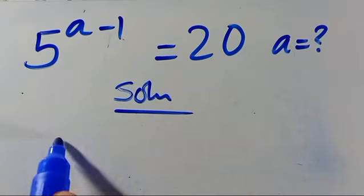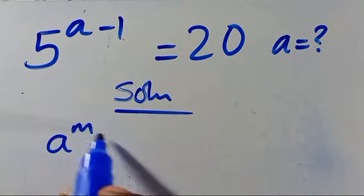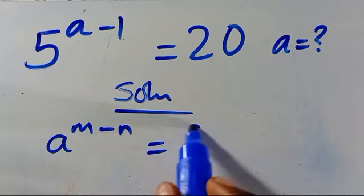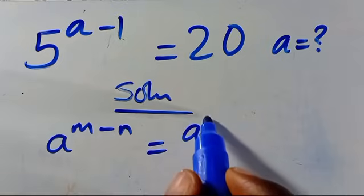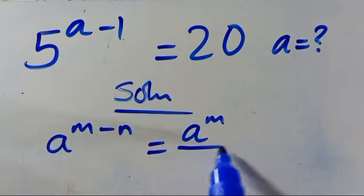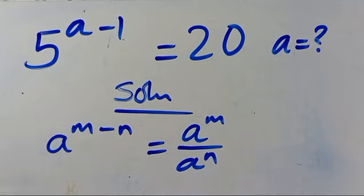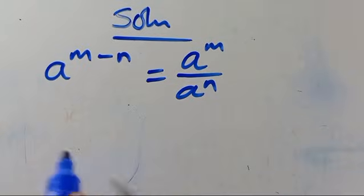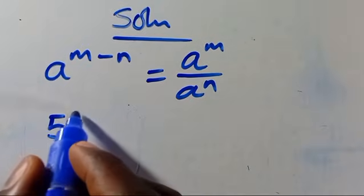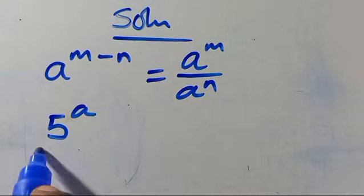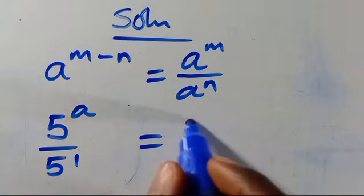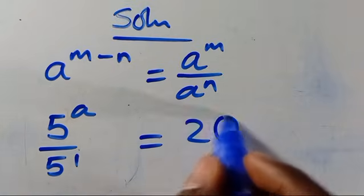Recall that when we have A to the power of M minus N, this equals A to the power of M divided by A to the power of N. So when we apply it here, we are going to have 5 to the power of A divided by 5 to the power of 1 equals 20.